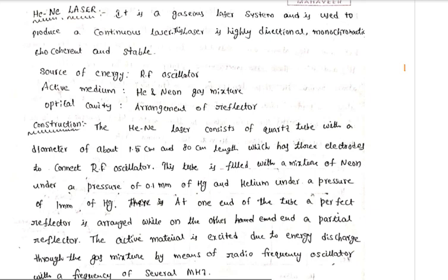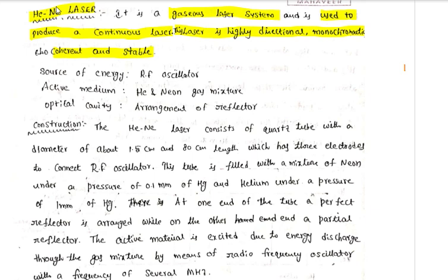The helium-neon laser uses helium and neon, which are inert gases. It is a gaseous laser system used to produce a continuous laser beam. Unlike the ruby laser from our previous class, which is a pulsed laser releasing pulses every 10 nanoseconds, the helium-neon laser produces a continuous beam. This laser is highly directional, monochromatic, coherent, and stable, capable of traveling long distances.